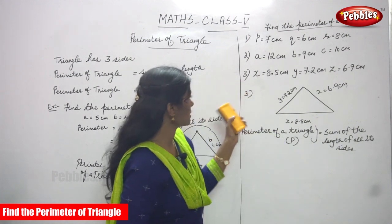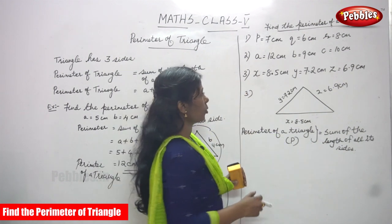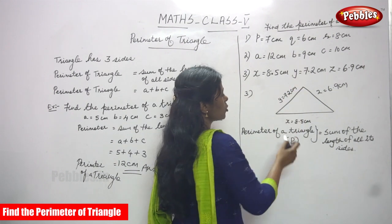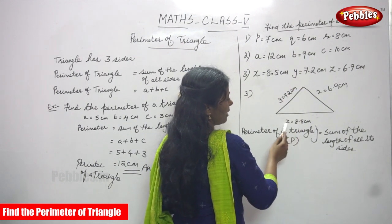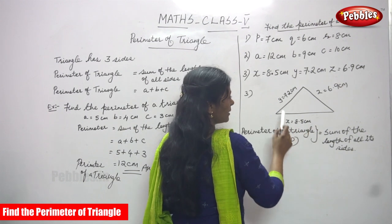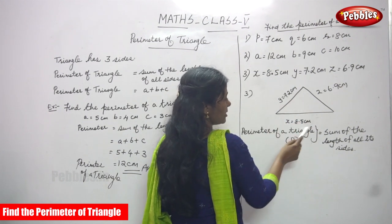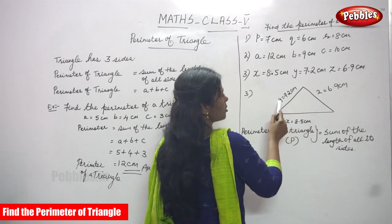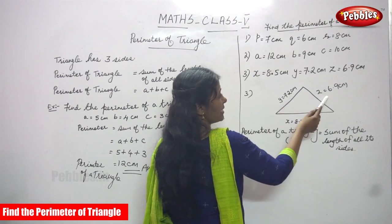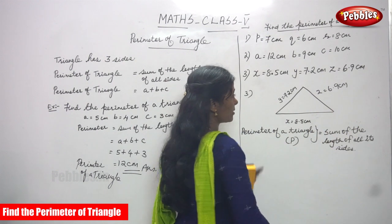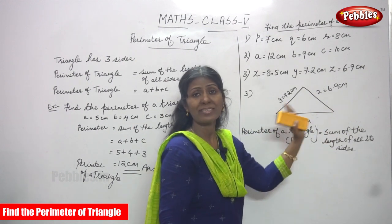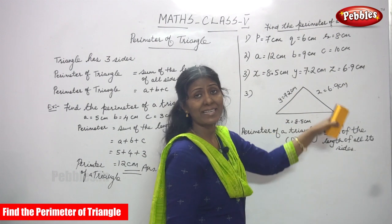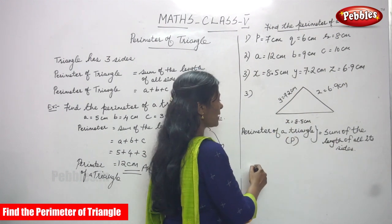Now we are going to do the third sum. We have to find the perimeter of a triangle. There are three sides given: the first side x is equal to 8.5 centimeters, y is equal to 7.2 centimeters, and z is equal to 6.9 centimeters. So the length of the three sides is given, and we have to find the perimeter of the triangle.